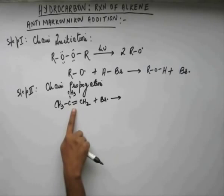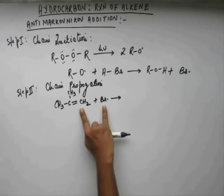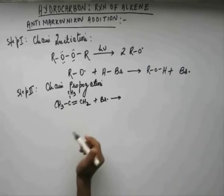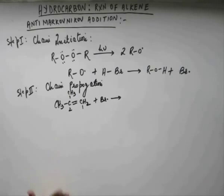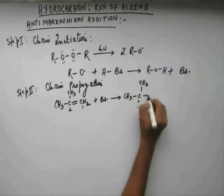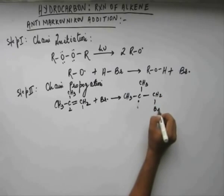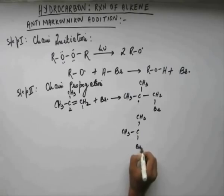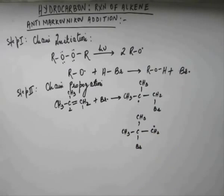The pi bond has to break and a carbon radical (C·) will be generated, which will then react with Br·. Either C1 or C2 can react since both are involved in making the pi bond. If C1 reacts, the free radical will be formed on C2; if C2 reacts, the free radical will be formed on C1. Let's consider both reactions and then judge which carbon bromine should attach to. If bromine attaches to C1, the free radical forms on C2; if bromine attaches to C2, the free radical forms on C1.